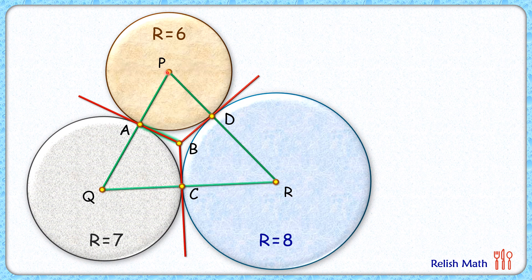Now here, PA and PD are radii of the circle, so this will be 6 and 6. Here QA is 7 and QC is 7. And here DR is 8 and CR is 8.